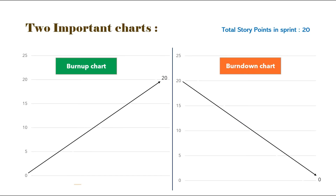This sprint can be measured using two important charts: one is the burn up chart and another one is the burn down chart. In a burn up chart, the count starts from 0 and goes on adding up to the target number. Here the target number is the total number of story points in the sprint, that is 20. But in the burn down chart, the count starts from 20 and goes on reducing down to 0.